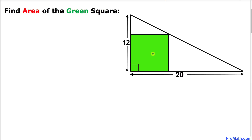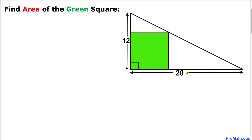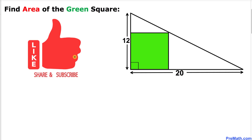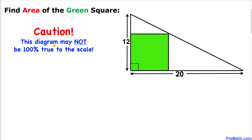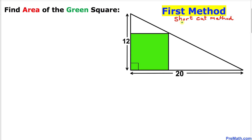Welcome to pre-math. In this video tutorial we have a green square inside a right triangle. The side lengths of this right triangle are 20 and 12, and we are going to find the area of this green square. In this tutorial I will share two different methods. Note that this figure may not be 100% true to scale.